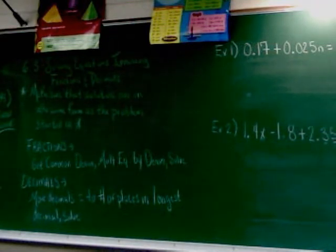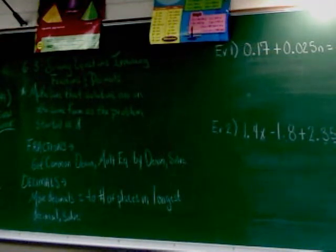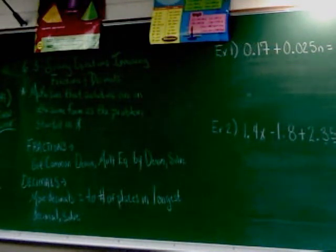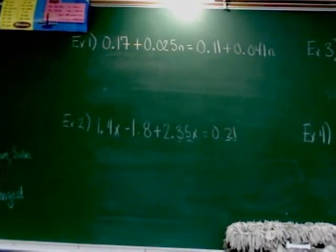You could work with this equation just like it is — you don't have to change a thing. You could work with the decimals the whole way through and get the right answer. It would take a lot of work, but there's an easier way. Here's what you're going to do: look at the problem and ask which term has the most number of digits after the decimal.